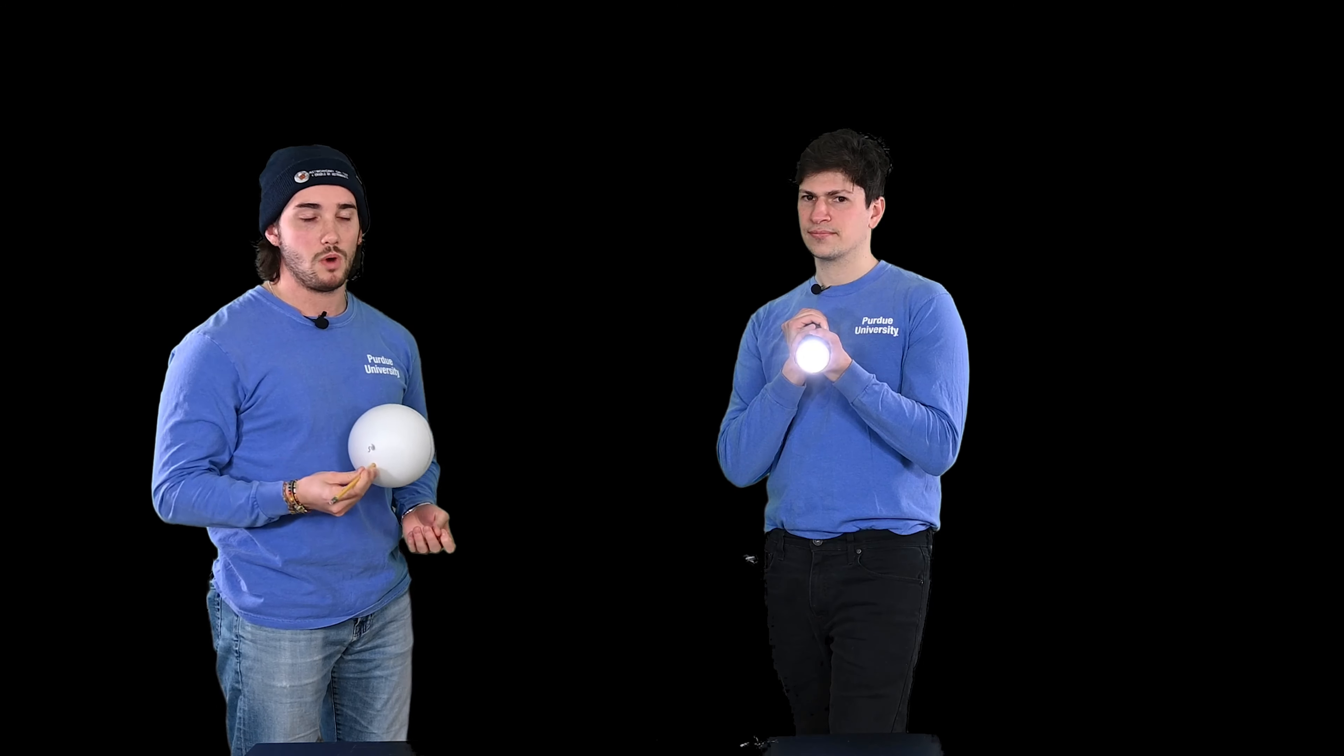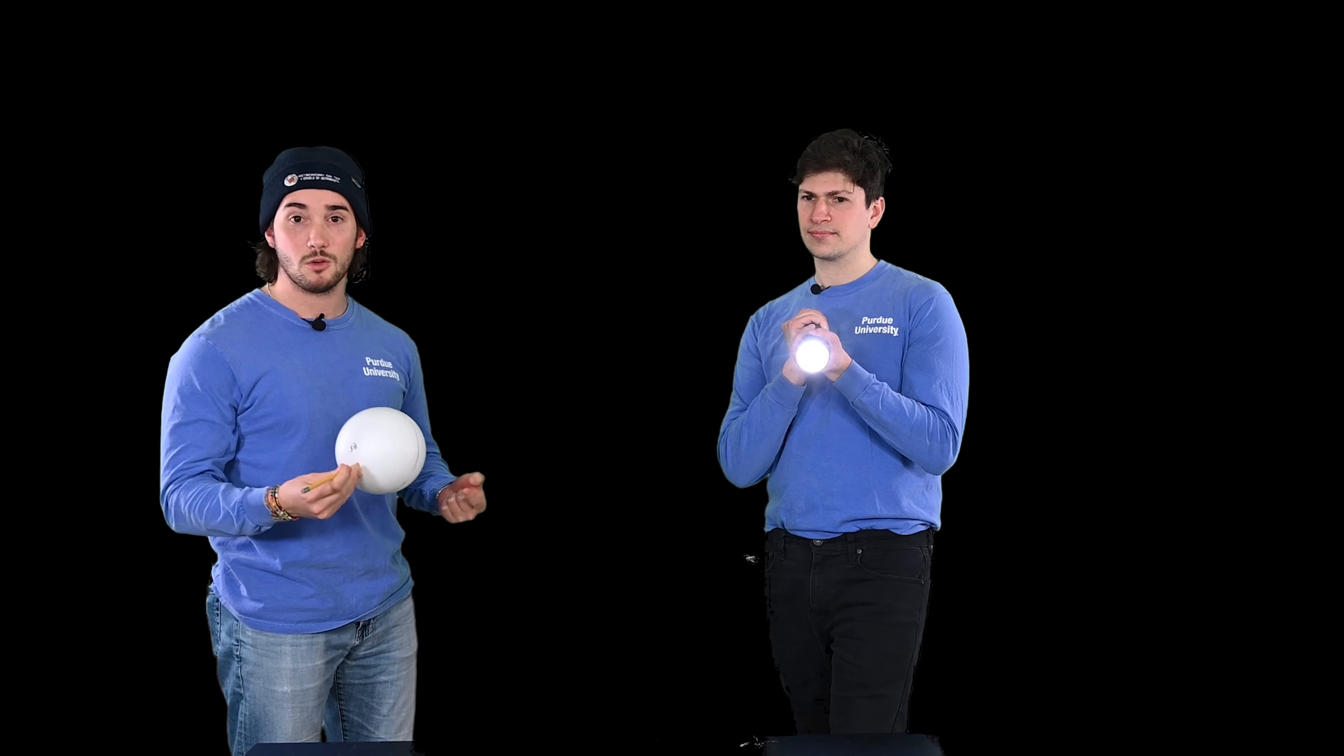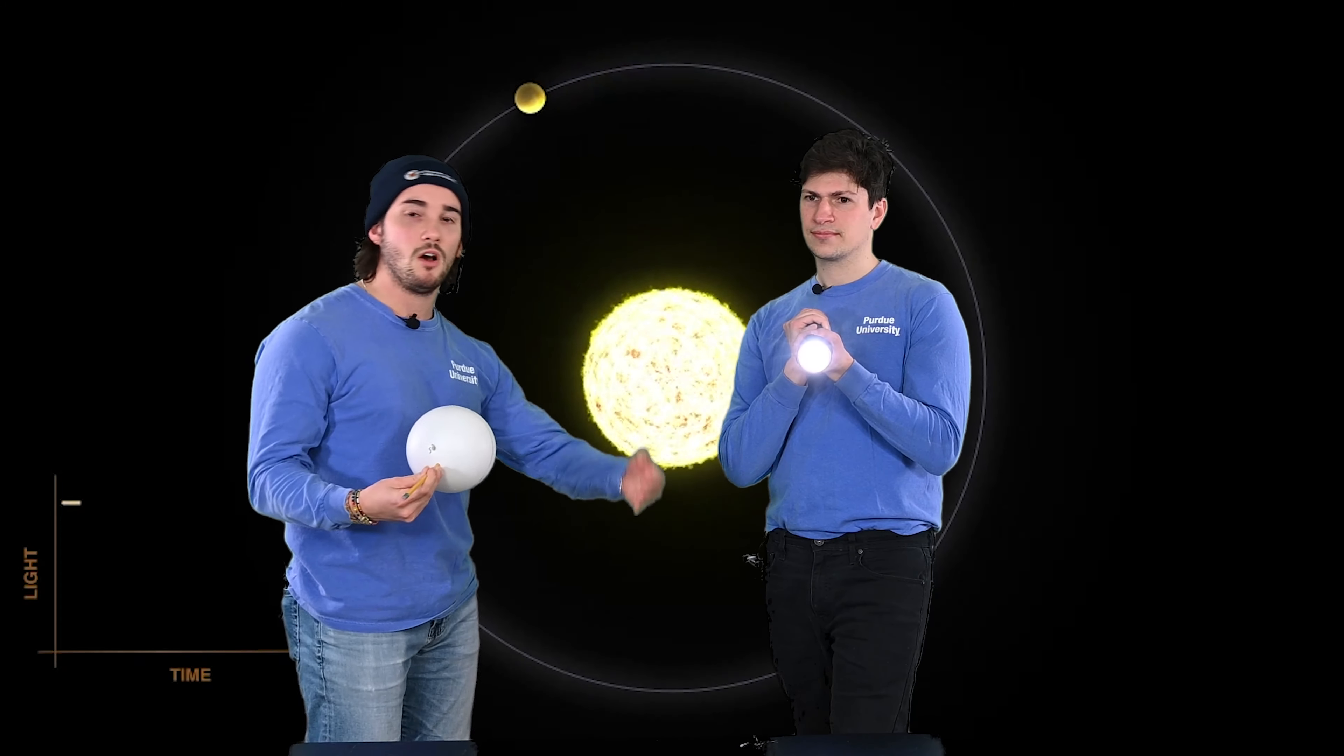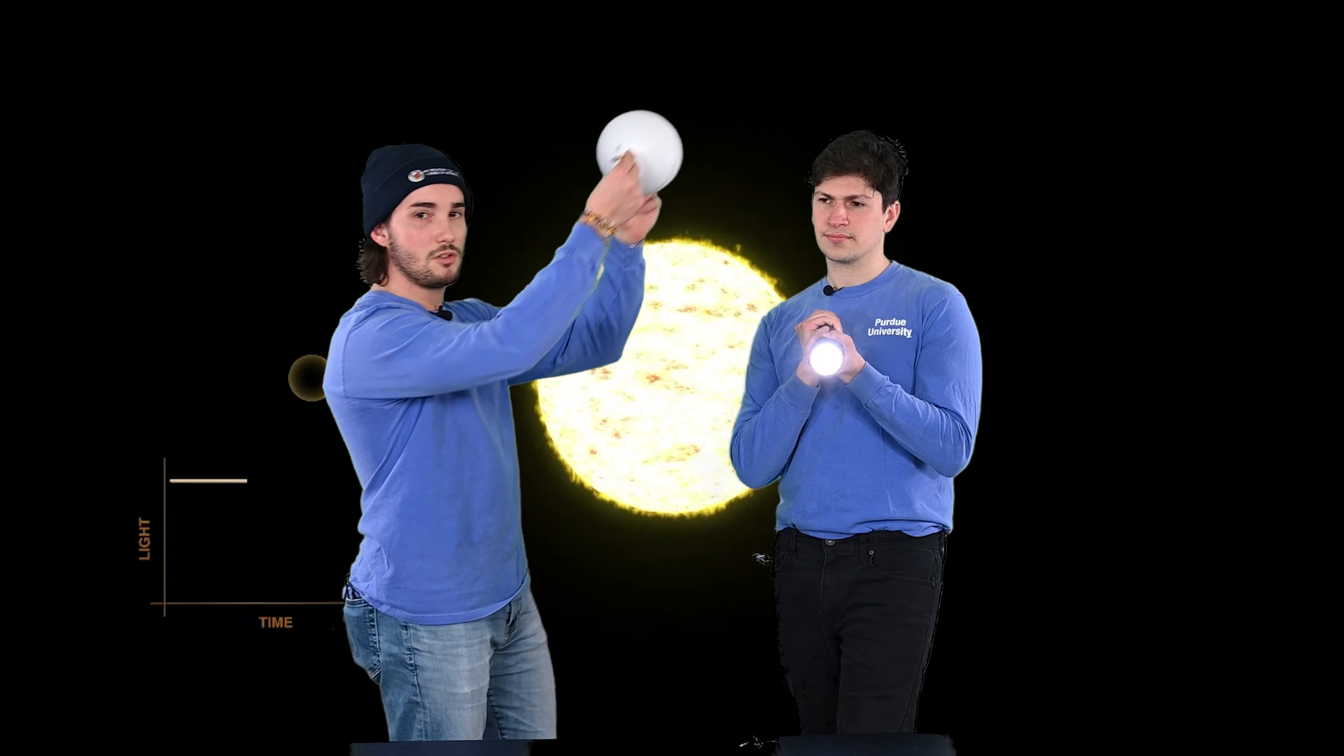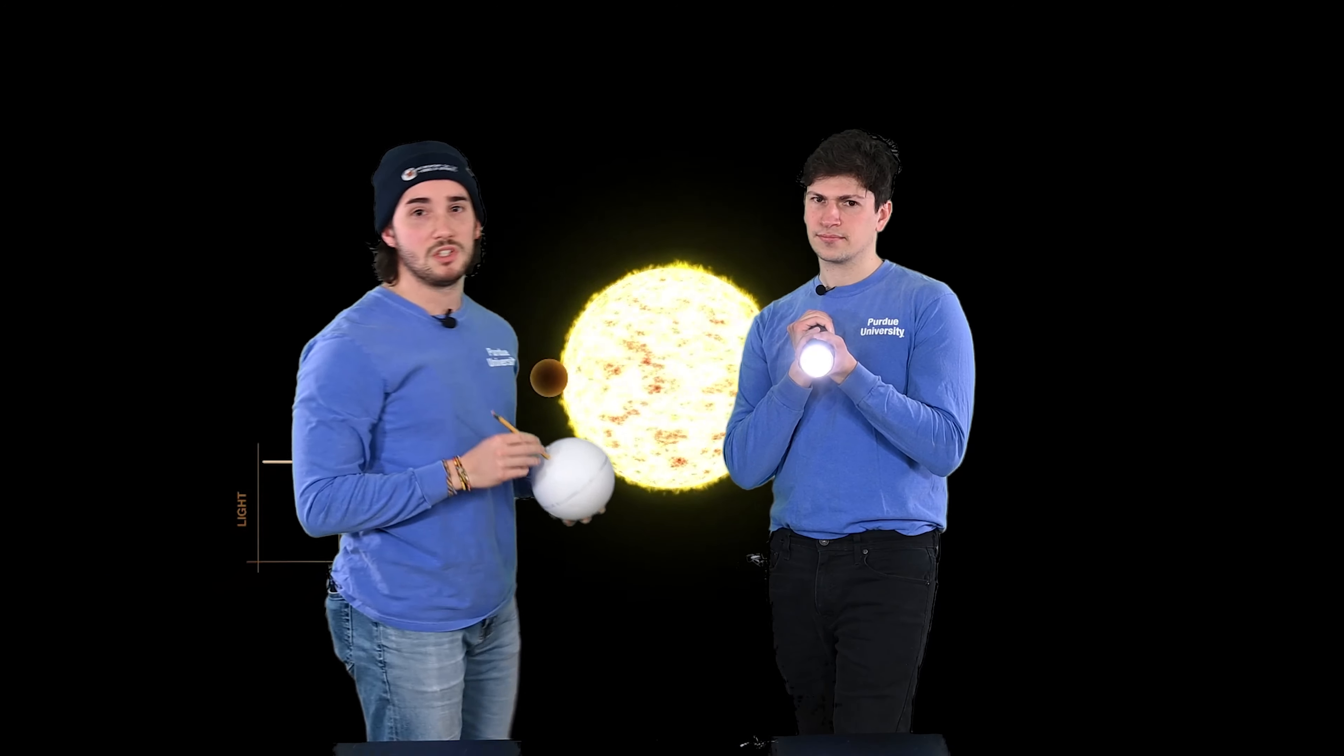But some considerations when detecting exoplanets with this method is how our angle is compared to that star. So if we're looking at a distant star and the planet is orbiting it in this direction, then we won't be able to detect it.